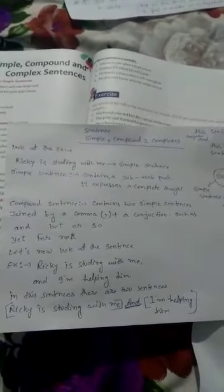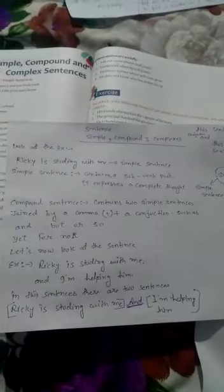A compound sentence contains two simple sentences joined by a comma plus a conjunction such as and, but, or, so, yet, for, nor.